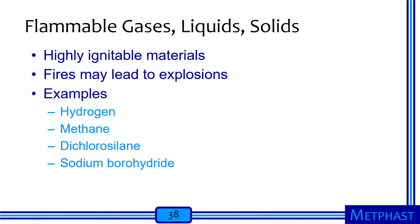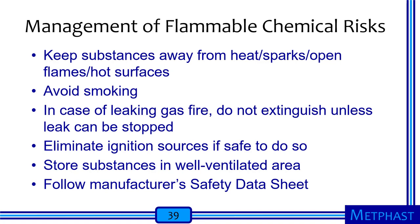Flammable gases, liquids, and solids are highly ignitable materials that may cause fires leading to explosions. Examples include hydrogen, methane, dichlorosilane, and sodium borohydride. Management of flammable chemical risks includes keeping substances away from heat, sparks, open flames, and hot surfaces; avoiding smoking; not extinguishing leaking gas fires unless the leak can be stopped; eliminating ignition sources if safe; storing substances in well-ventilated areas; and following the manufacturer's safety data sheet.